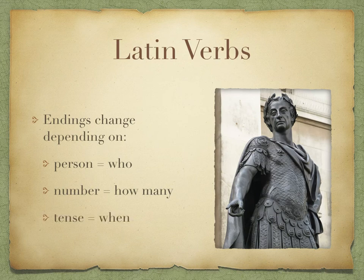And the third thing is tense, which tells us when a verb is being done. We have met three tenses: the present, the imperfect, and the perfect.